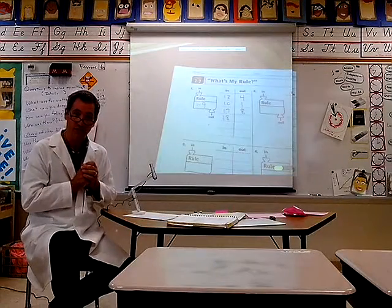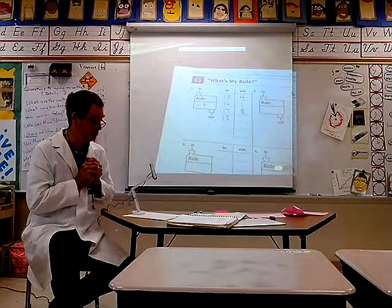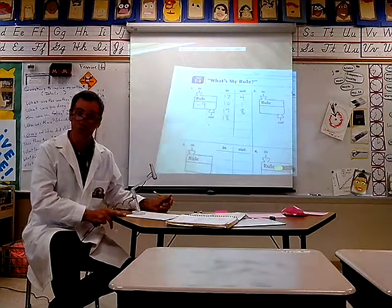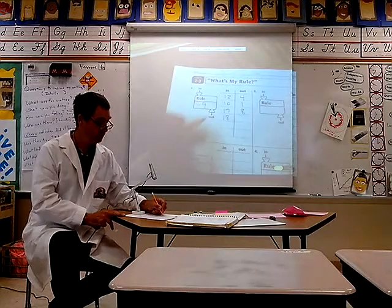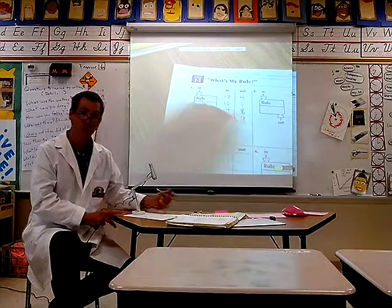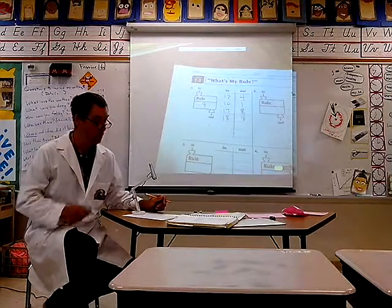And finally, our last example for the first type of function machine. 18 is dropped in, 9 are taken away, and you are left with... that is correct, that is 9. So that is the first type of function machine that you will run into.